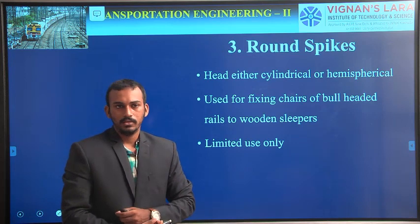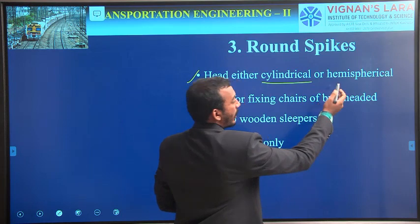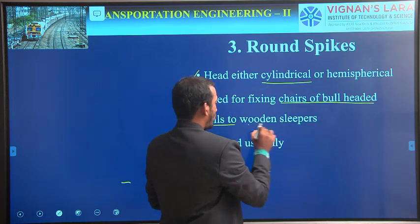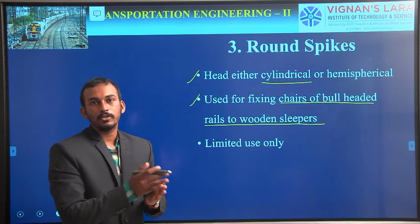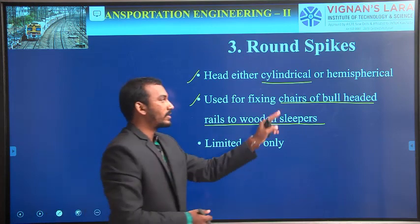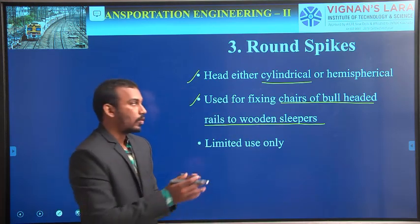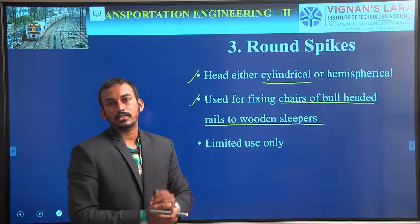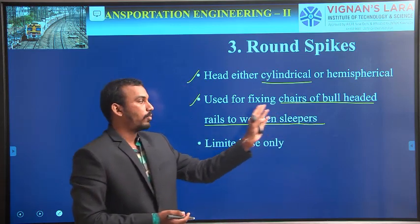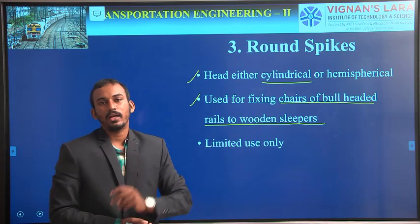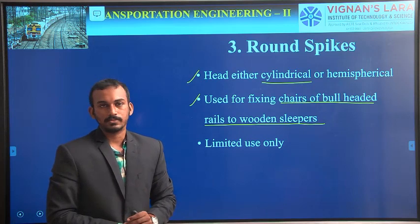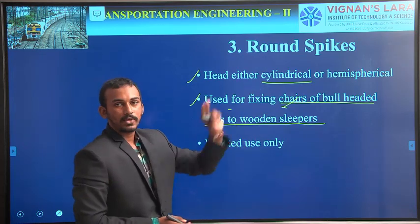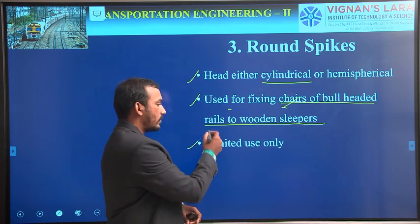Coming to the next one, round spikes. These are also similar, but the head is either cylindrical or hemispherical. These are mainly used to fix chairs of the bull-headed rails to the wooden sleepers. Here, we are not directly connecting the flange of the rail to the sleepers — we are using a chair to connect rails to the sleepers. So why are we using round spikes? To hold the chair with the sleepers. Chairs are joined with the sleepers and rails are joined with the chairs. These are used for fixing chairs of bull-headed or double-headed rails to wooden sleepers. These are also used for wooden sleepers only and are generally of limited use.